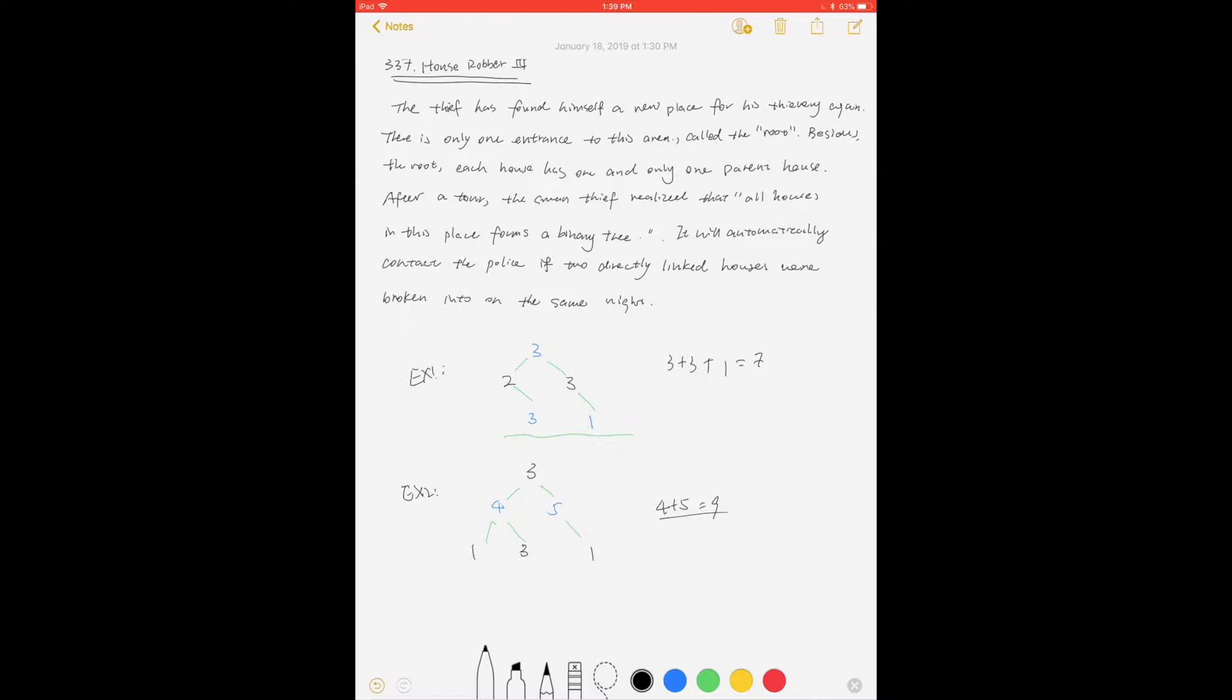The thief has found himself a new place for his thievery again. There is only one entrance to this area called the root. Besides the root, each house has one and only one parent house. The smart thief realized that all houses in this place form a binary tree. It will automatically contact the police